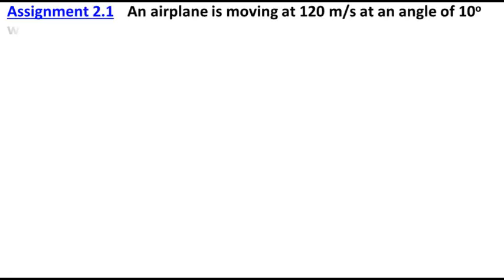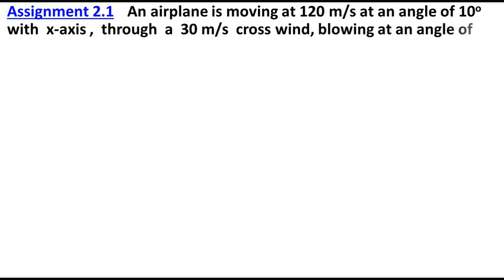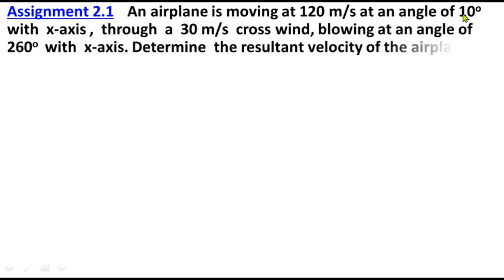Assignment 2.1: An airplane is moving at 120 meters per second at an angle of 10 degrees with the x-axis through a 30 meters per second crosswind blowing at an angle of 260 degrees with the x-axis. Determine the resultant velocity of the airplane.